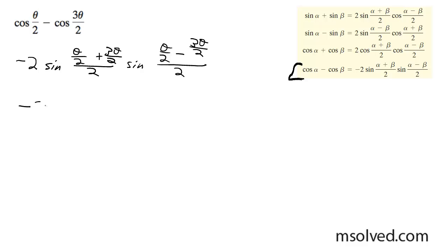So what I'm going to do here is come down negative 2. I'm going to have sine. These upper terms you can combine the like terms. You get 4 theta divided by 2 divided by 2.